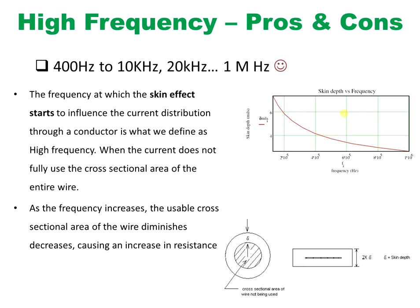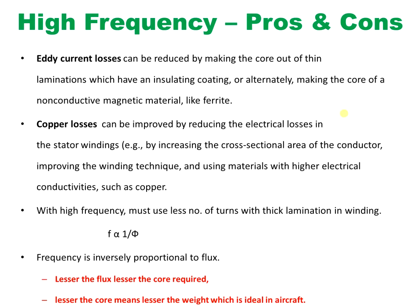The FAA — Federation of Aviation Agencies — set this as a standard, similar to ISA, IEC, or AEQ standards for other industries. Every industry has an approving agency. So the FAA set 400 Hz as the standard during the initial days of aircraft power systems.